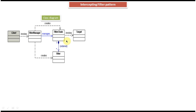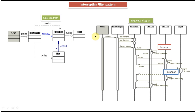Next we will see the sequence diagram of intercepting filter design pattern. Here you can see client, filter manager, filter chain, filter one, filter two, and target. The client invokes the filter manager, and the filter manager creates the filter chain, then sets filter one and filter two into the filter chain. So it adds two filters in the filter chain, then forwards the request to the filter chain.